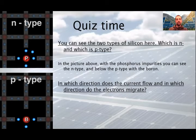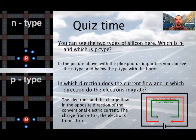In which direction does the current flow and in which direction do the electrons migrate? As you see on the drawing, the electrons and the charge flow in the opposite direction of a conventional electric current. The charge from positive to negative, the electrons from negative to positive.